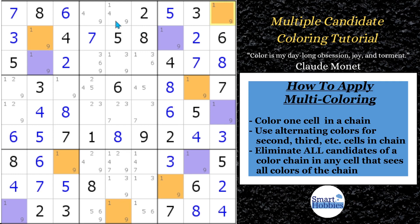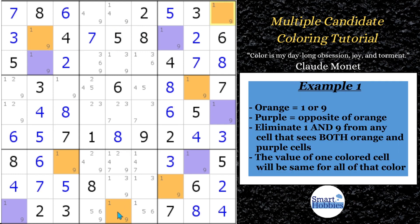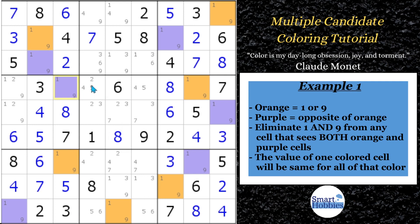We can make some eliminations looking across other cells. In row nine, we have a purple and an orange right here — that means we can eliminate all the other ones and nines in that row. Going to row seven, same thing: I got one-nine here and one-nine here. You can't have a one or nine in any of those other cells, which makes this a two-four-seven naked triple. Then up in row four, I missed a color — I need to color that purple. Looking at row four: that can't be a one-nine, this can't be a one or nine, so we can actually solve that cell for a two.